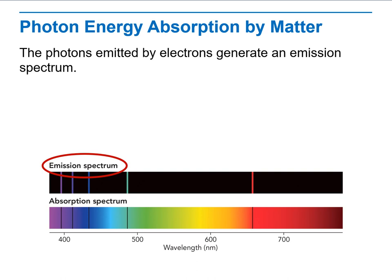Photon energy absorption by matter. The photon emitted by electrons generates an emission spectrum. When electrons jump to a lower energy level, they emit a photon of specific energy, which can be observed on a spectrum. When electrons absorb energy from a continuous spectrum and jump to a higher energy level, the corresponding lines are removed from the spectrum. Because each element has its own set of spectral lines, what can we learn from a spectrum of an object such as a distant star?